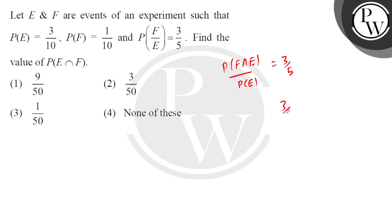So 3/5 into 3/10, and that will equal... here P of F intersection E ki value. So that is basically coming out as 9/50. So the correct option, if we look at it...